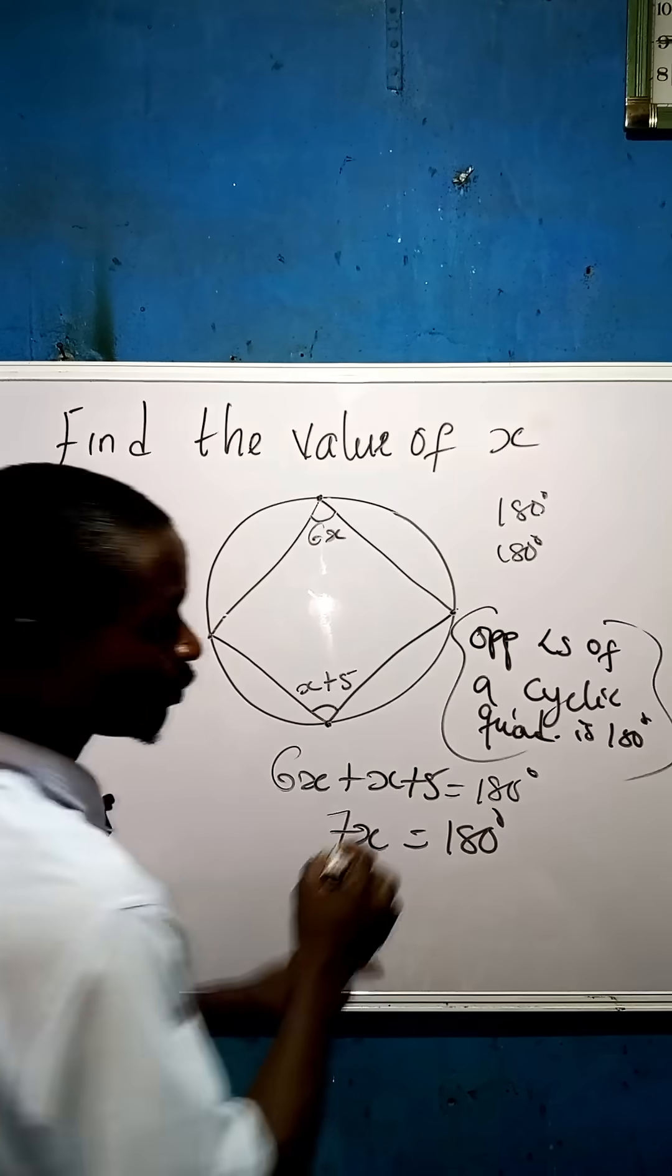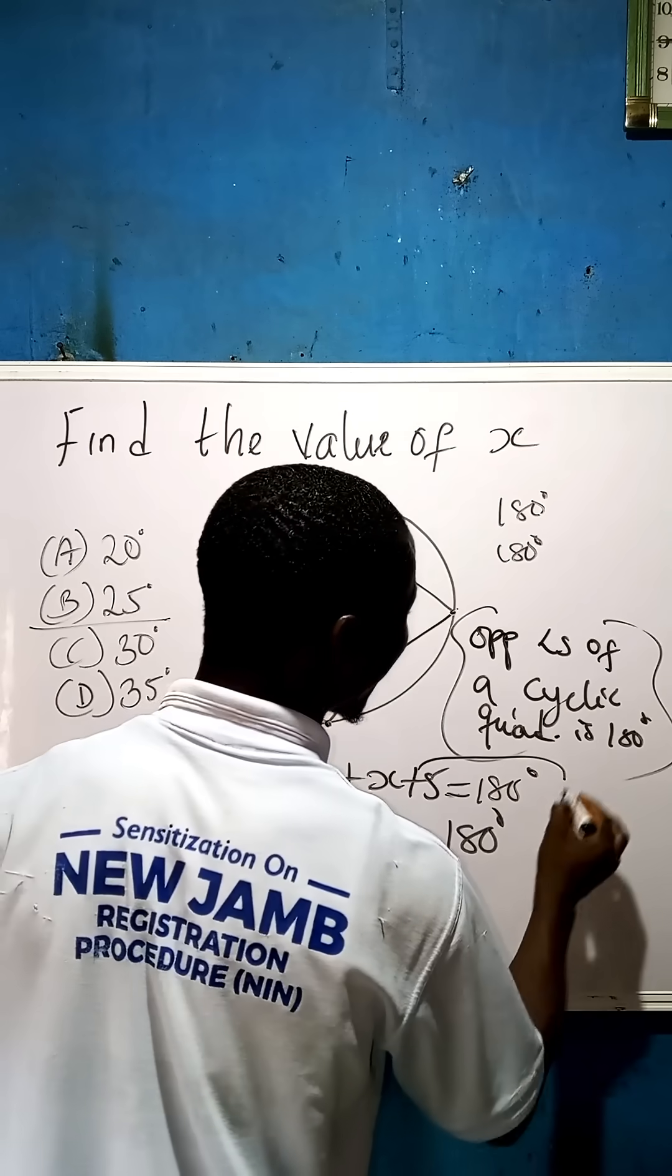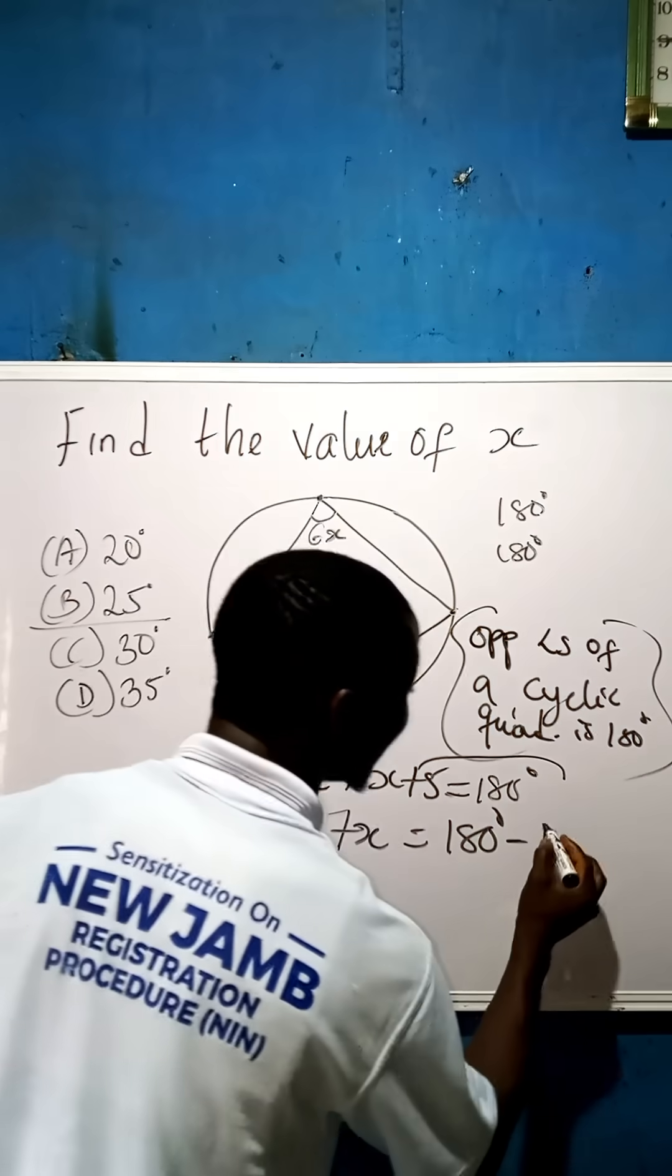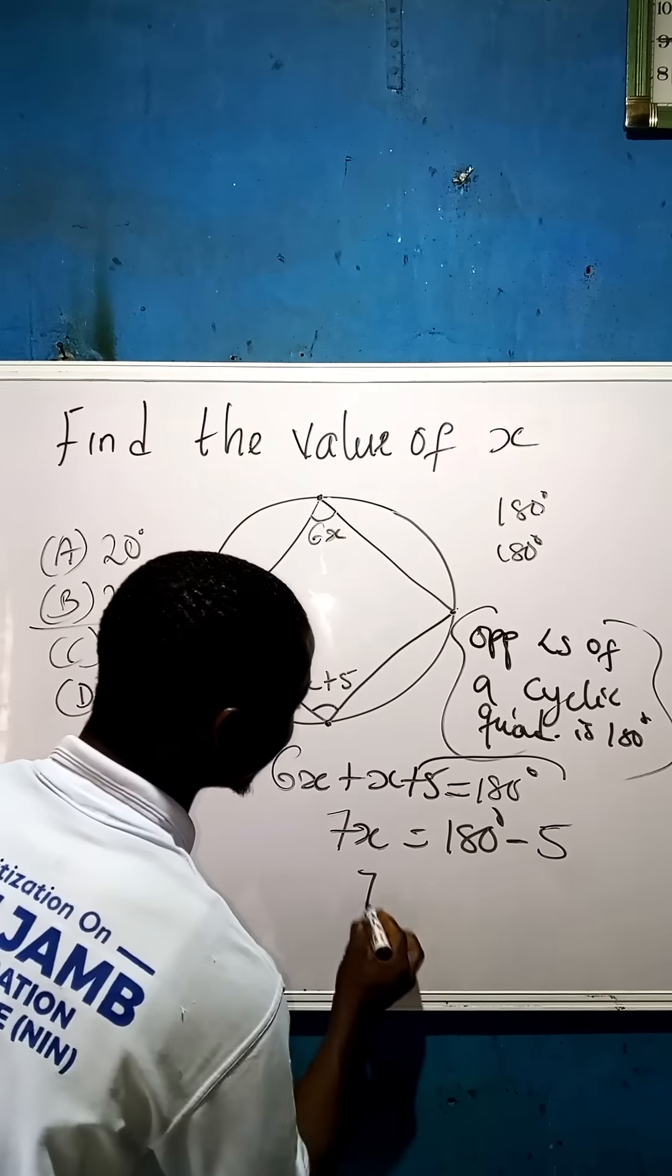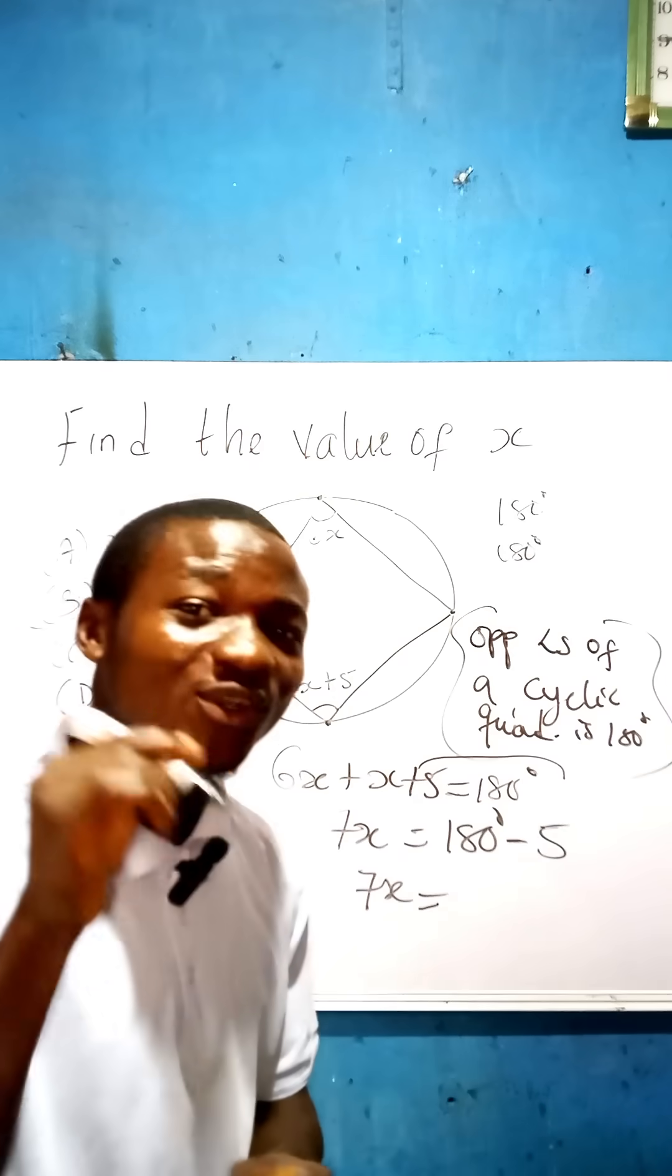Remember, there's a plus here. When it's crossing this equality sign, the plus becomes minus. Then these 5 come here also because they are like terms, number and number, which is 5. Now we are left with 7x equals to 180 minus 5, which gives us 175.